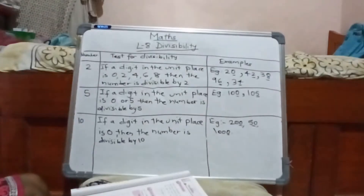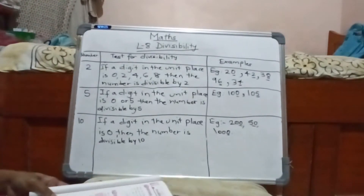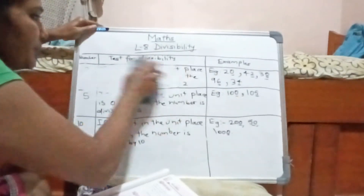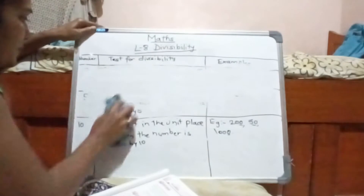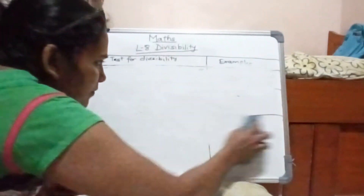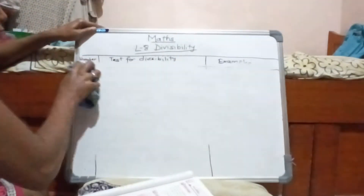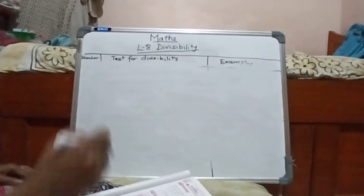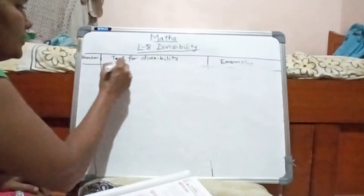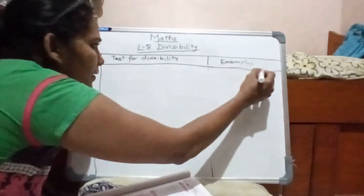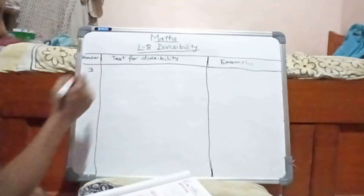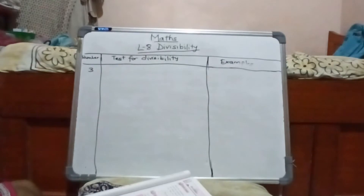Now we come to the next topic — what we are going to learn is the test for divisibility of 3, 4, and 9. I hope you have understood the recall. We already did those in the lower classes. Now as we go to a higher class, we have to study a slightly more difficult concept. With number 3, how do you come to know that a number is divisible by 3?